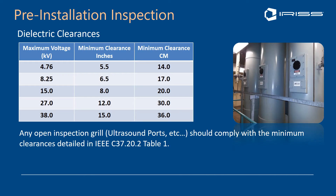Pre-installation inspections are of primary importance. One common question is how close you can put an infrared window to an energized connection. Typically you're bolting or cutting these into the actual covers, so the only dielectric inclusion should be from the bolt or fixings on the other side of the window. We also look at dielectric clearances listed in IEEE C37.20.2 Table 1. For a 15 kV panel, the minimum clearance should be 8 inches or 20 centimeters. For a 480V panel, the closest you should consider is 5.5 inches — these clearances are important to consider.